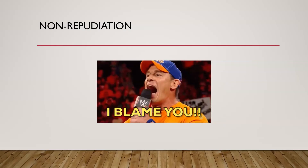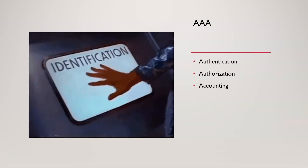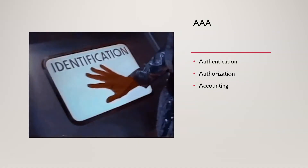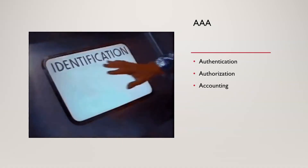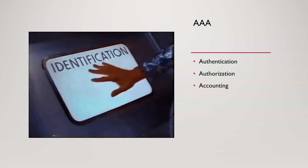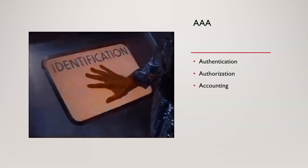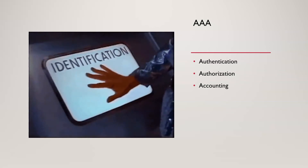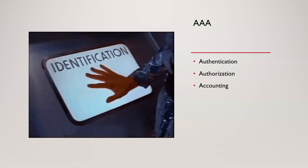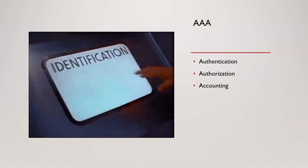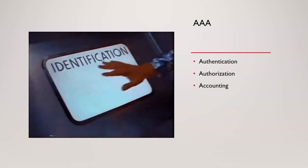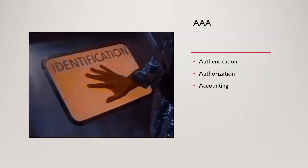Next up we have Triple A — again, not the roadside assistance, but authentication, authorization, and accounting. Authentication is the process of verifying the identity of a user, system, or application — confirming that an entity is who or what they claim to be. We can do this through various methods such as passwords, two-factor authentication, security tokens, and biometrics.